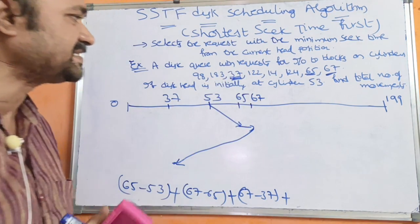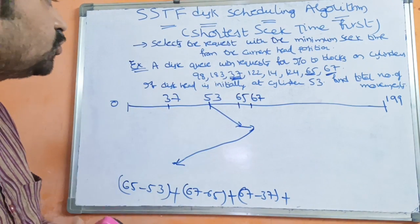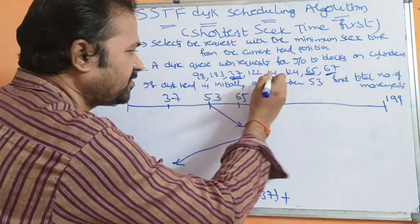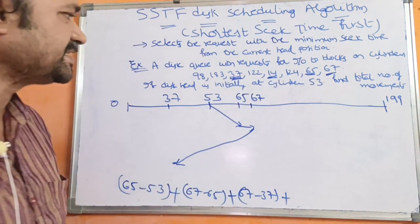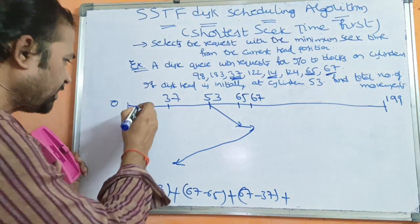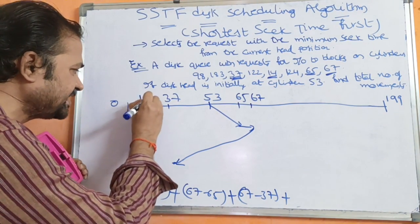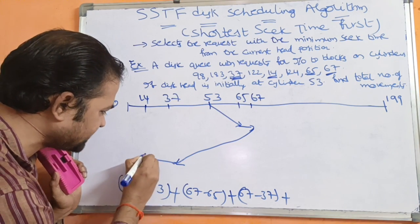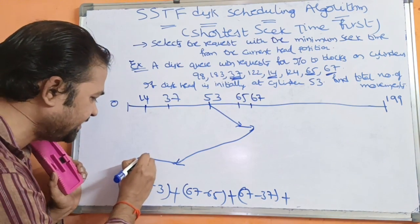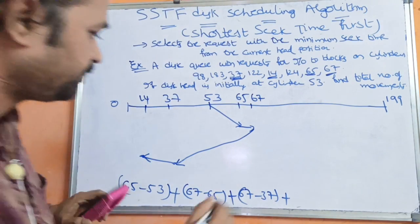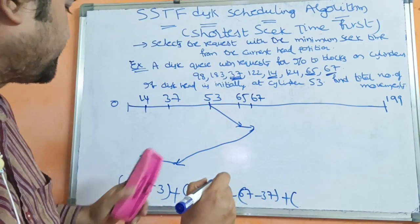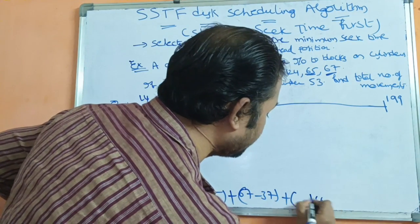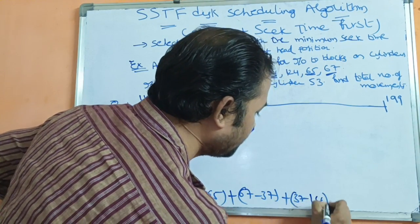Now we are at cylinder 37. The nearest remaining value is 14, because the difference between 37 and 14 is 23, which is the smallest. So the next cylinder to access is 14. The movement is 37 minus 14.